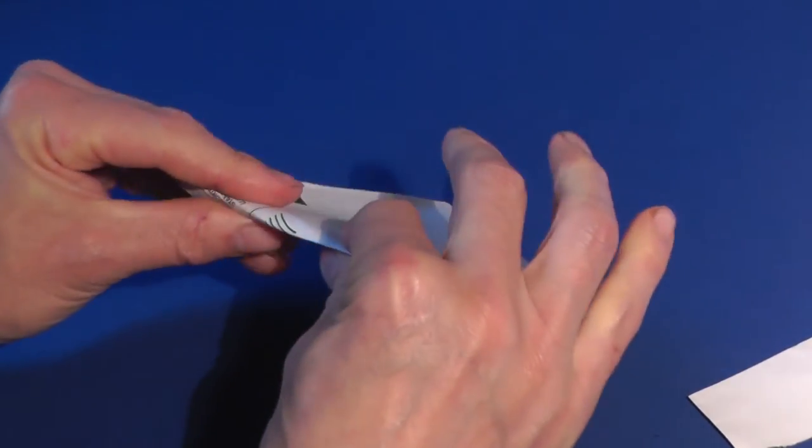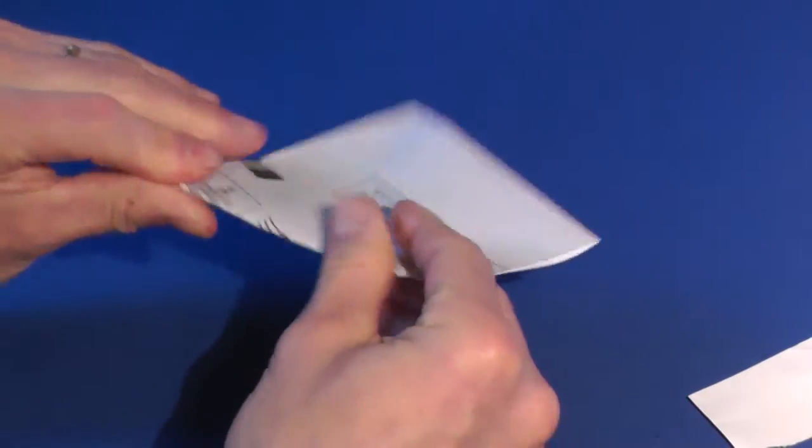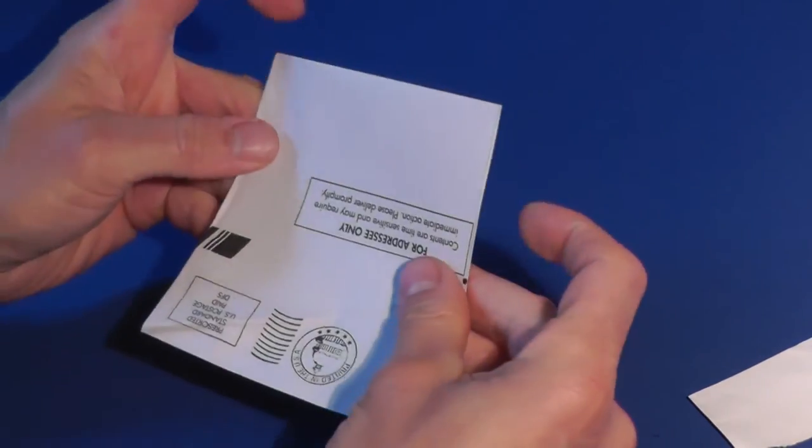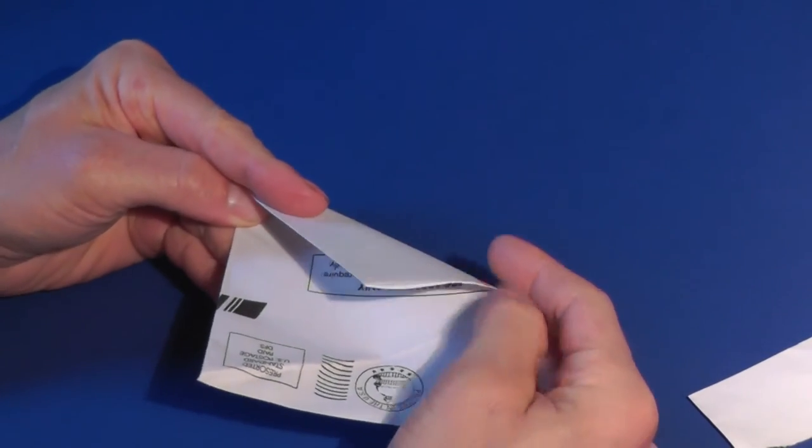Fold the crease back and forth. Do the same for the top edge of the envelope.